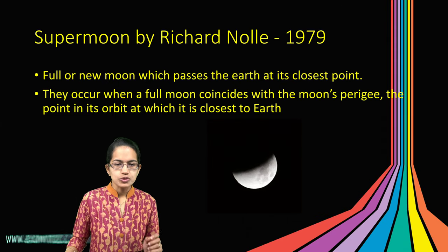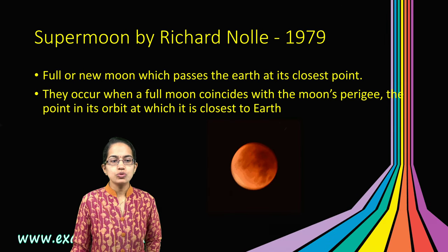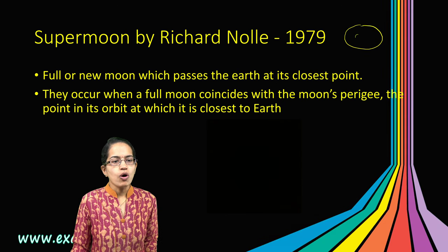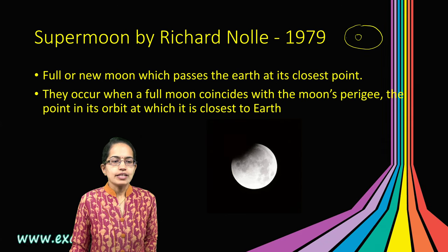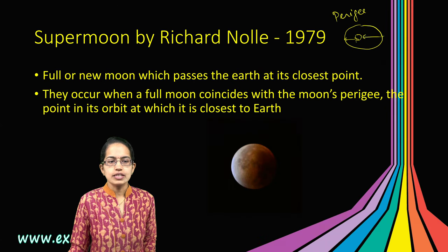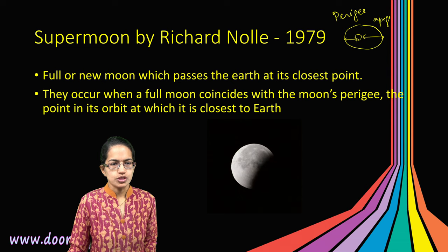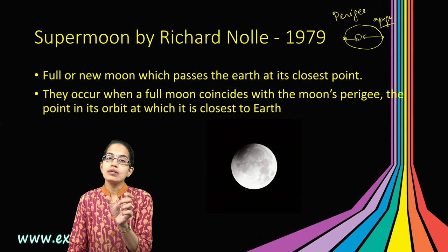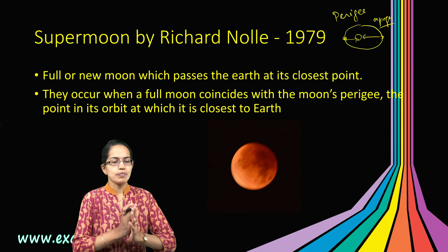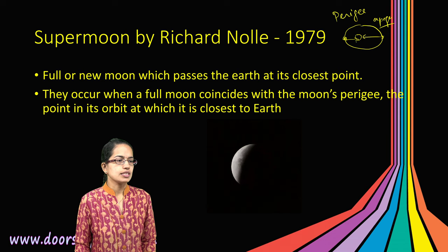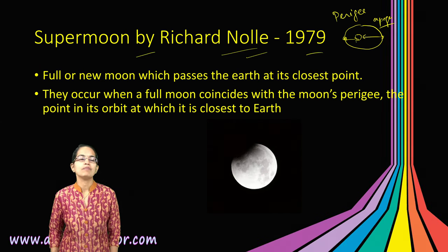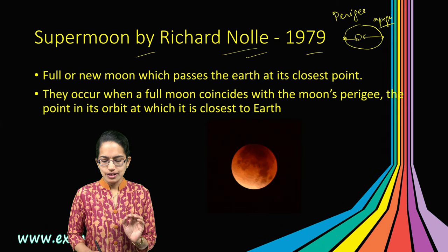Supermoon is a position where the moon is closest to the earth. The moon revolves around earth, and the point where it is closest is known as perigee, and the point where it is farthest is known as apogee. At perigee, the moon appears very giant in size, and this term was given by Richard Noelle back in 1979. A very important term and definition.